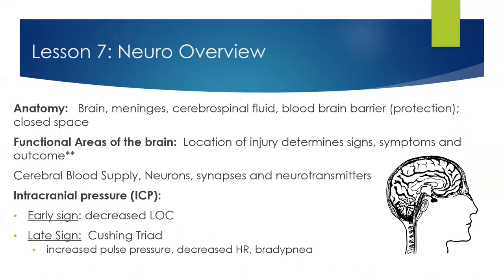Changing gears into neurology — anatomical features of the brain include meninges, the blood-brain barrier, and cerebrospinal fluid. The blood-brain barrier controls the balance of electrolytes, glucose, and proteins by limiting the passage of materials at the capillary level of the brain. Regarding increased intracranial pressure: a very early sign includes decreased level of consciousness, whereas a late sign is Cushing's triad — which is increased pulse pressure, decreased heart rate, and decreased respiratory rate. It's really important to know the difference between your early signs and your late signs.